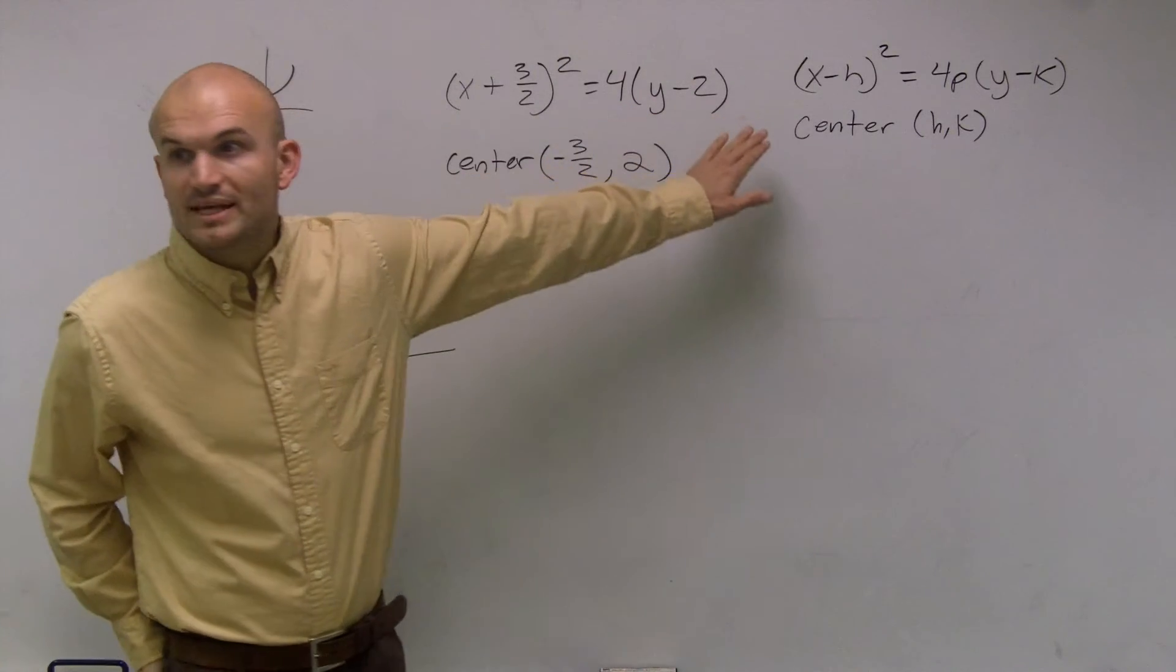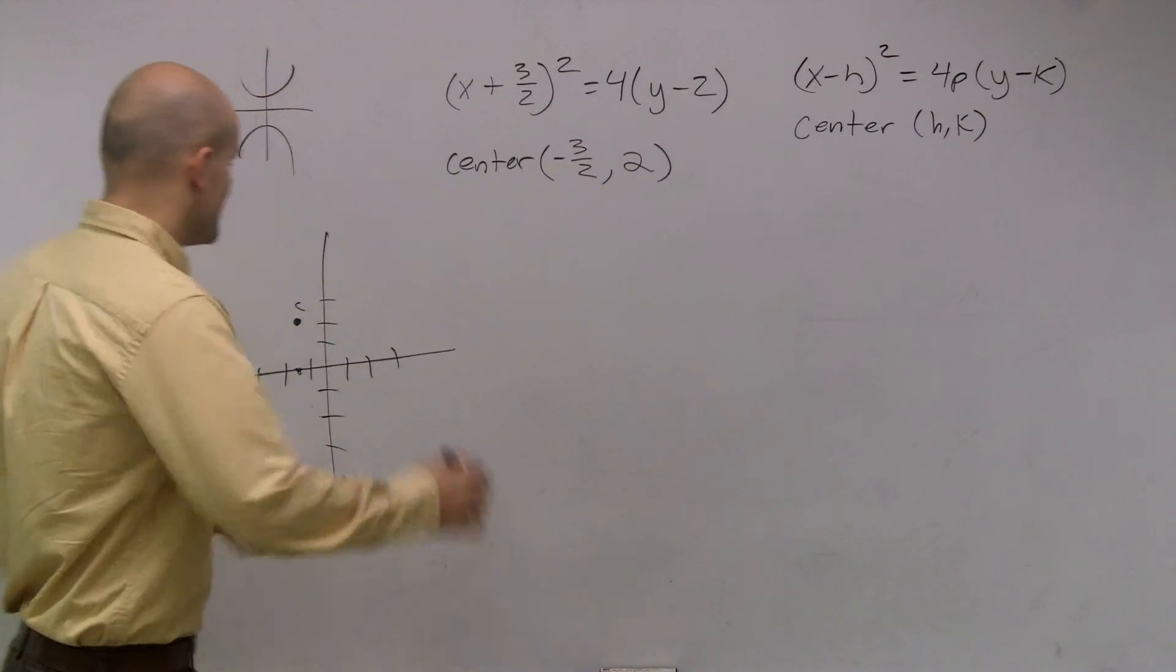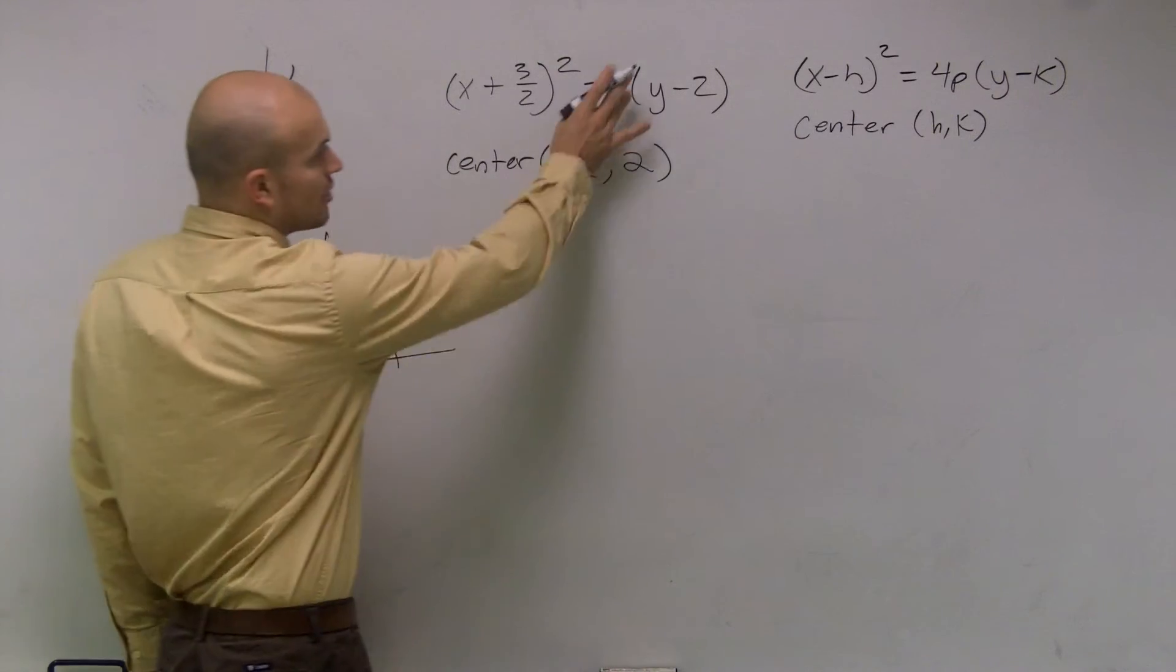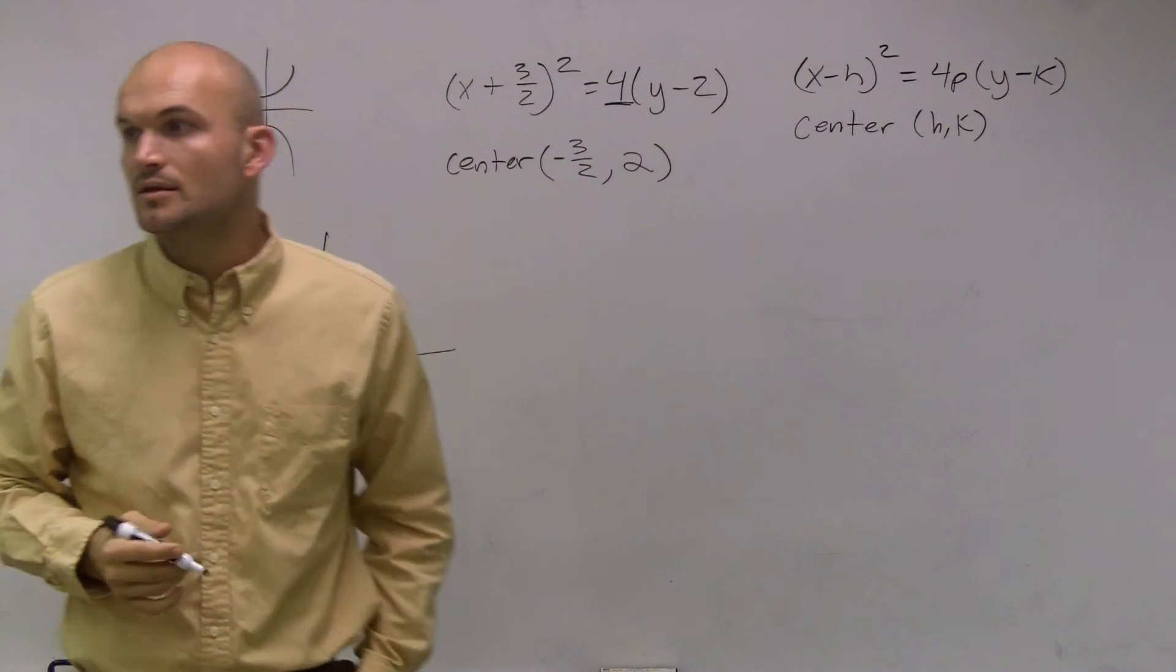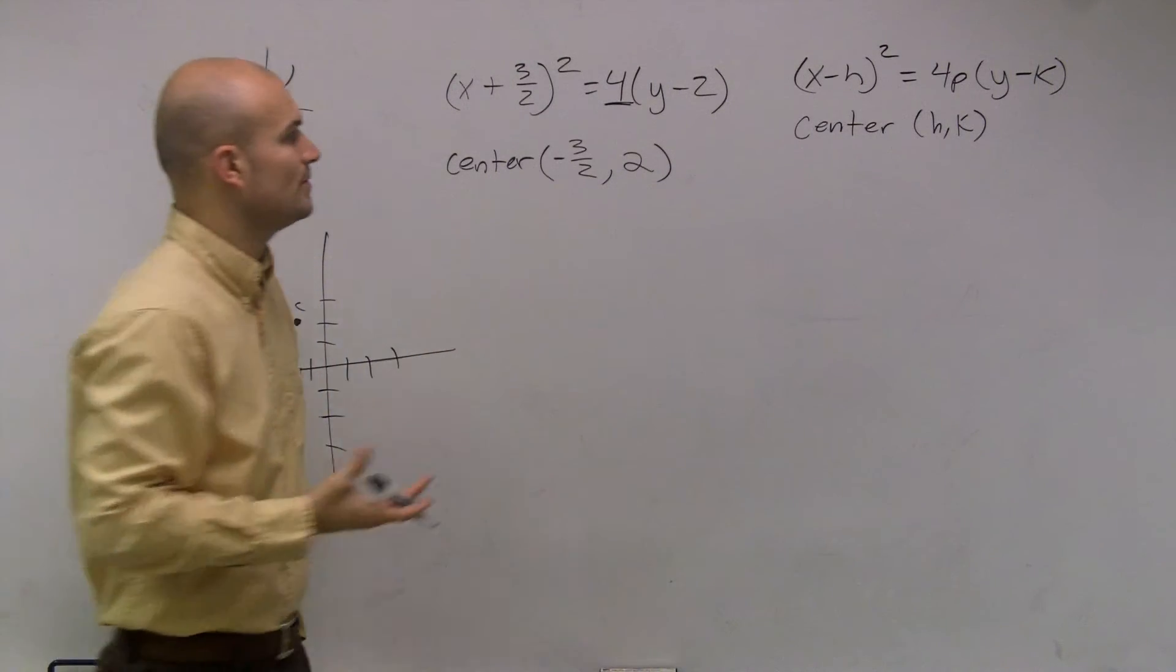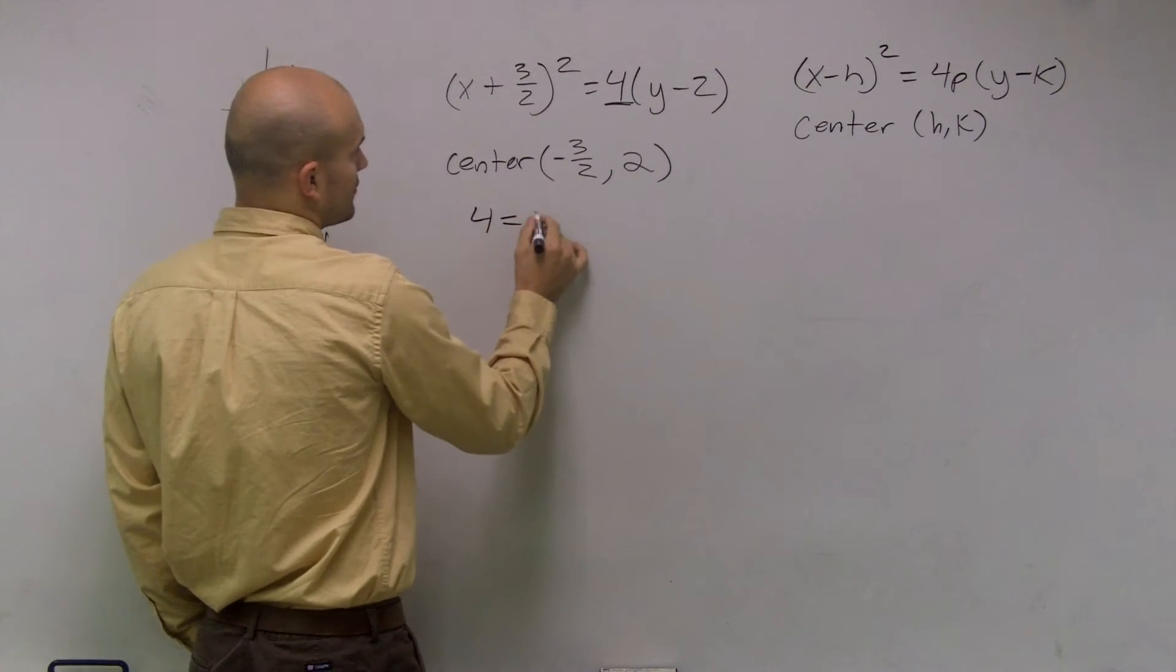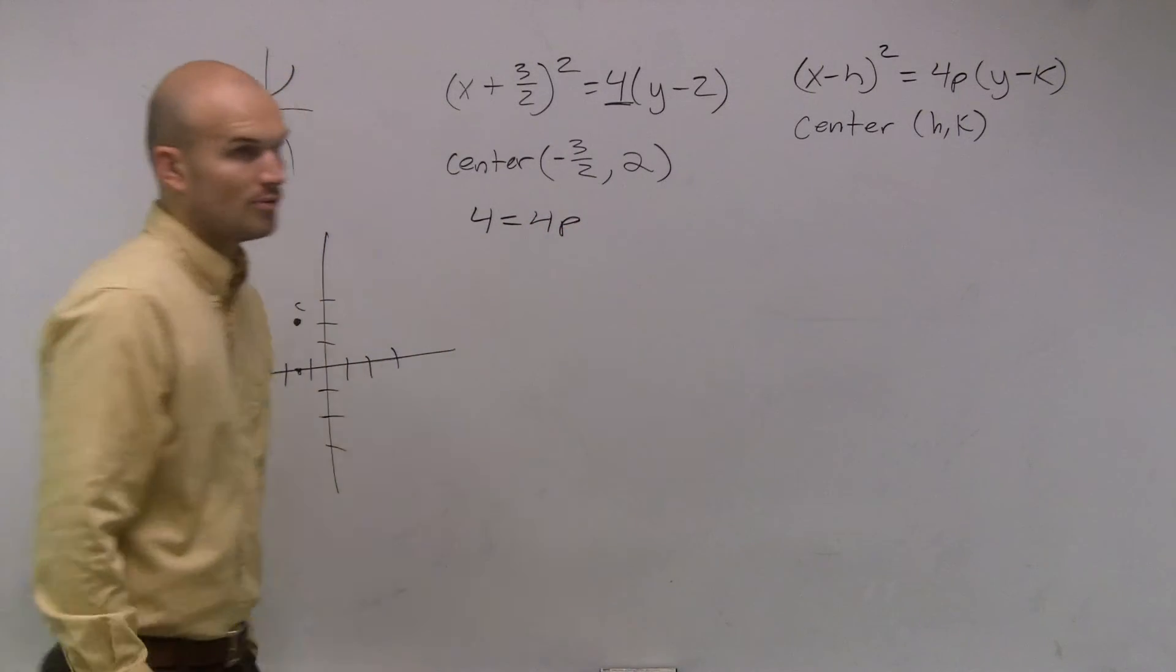Let's figure out what our p value is going to be. Remember, this either opens up or opens down. Our p value is whatever is multiplied in front, that's going to equal our 4p. So we can say 4 equals 4p.